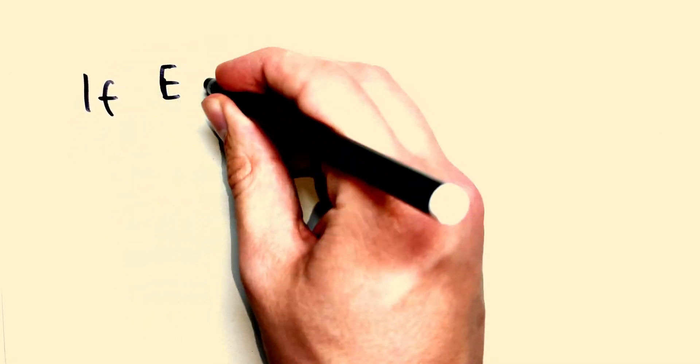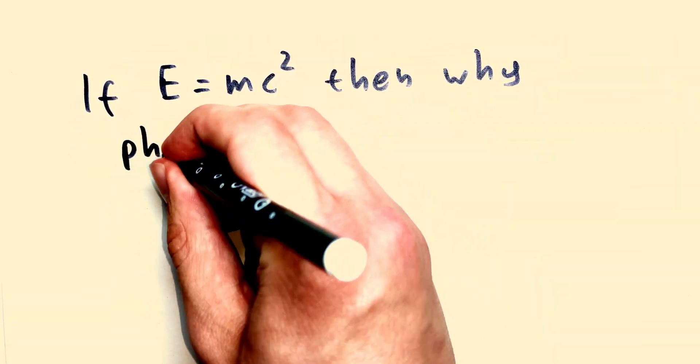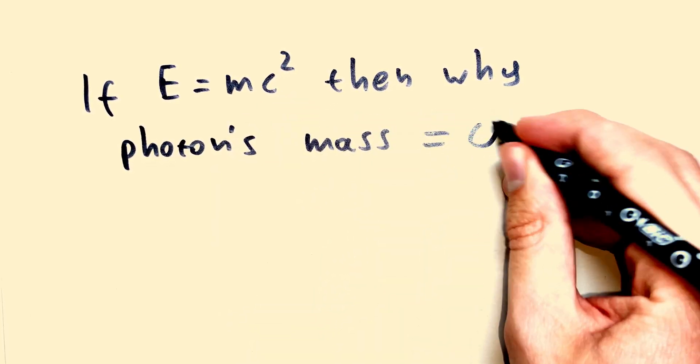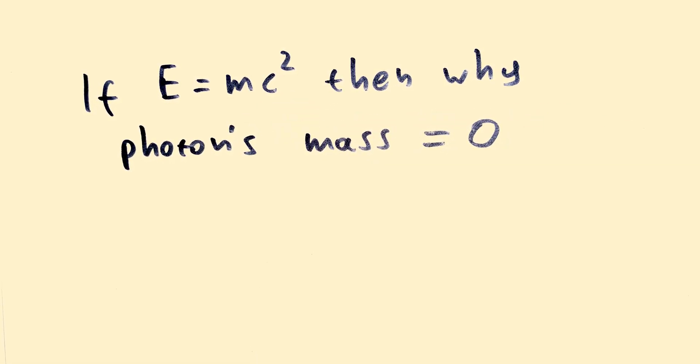Does mass increase as the velocity approaches the speed of light? If E equals mc squared and photons have energy, then why do photons don't have mass? Be sure to check the channel for the answers to these questions as well.